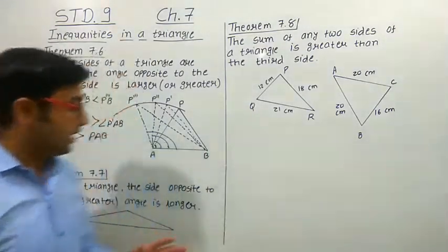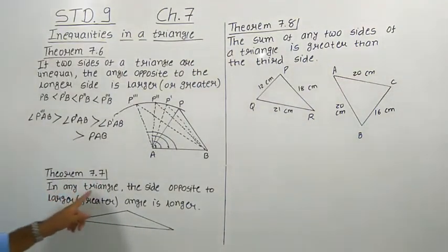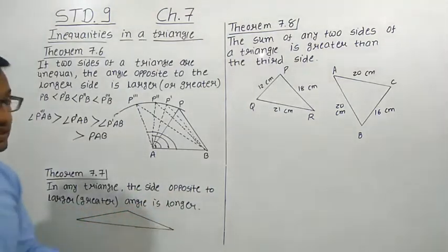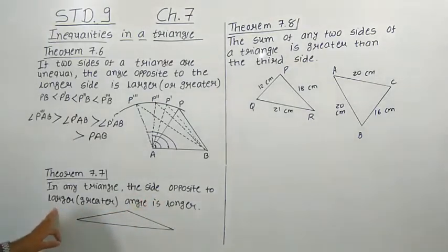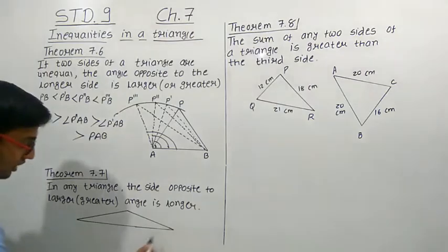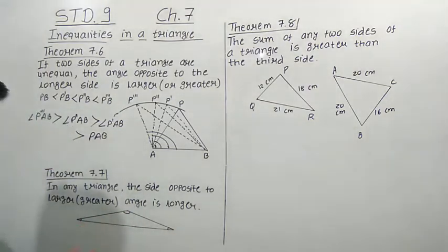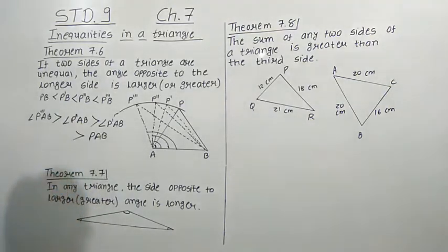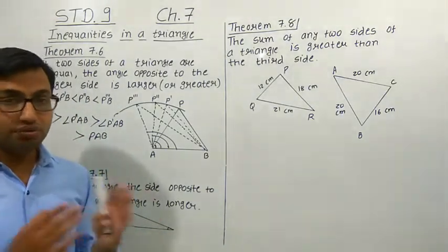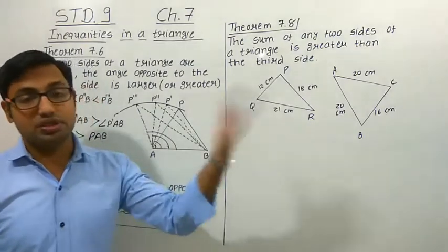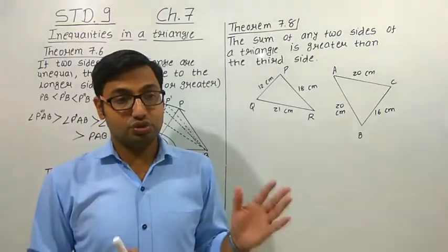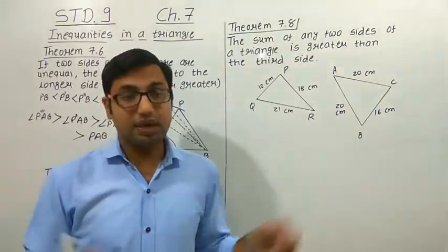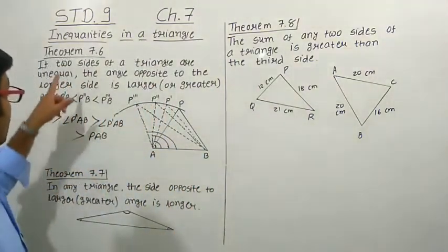There is a converse theorem, stated as Theorem 7.7: in any triangle, the side opposite to the larger angle is longer. Out of three angles, whichever angle is greater, its opposite side is longer. Similarly, out of three sides, whichever side is greatest, its opposite angle is also greater than the other two angles. These are Theorems 7.6 and 7.7 on inequalities in a triangle.